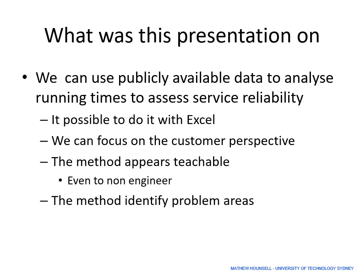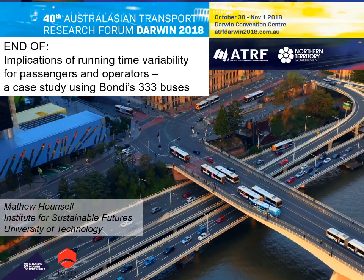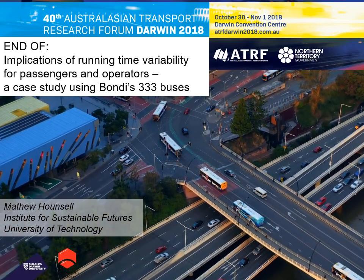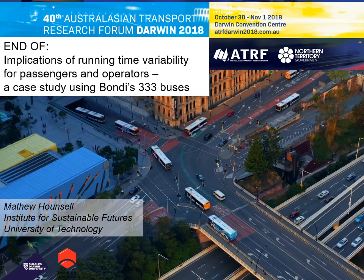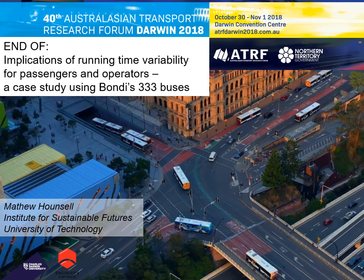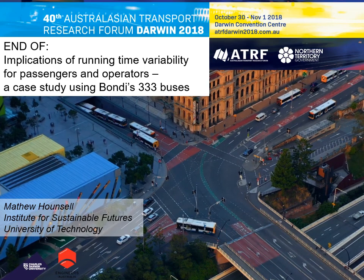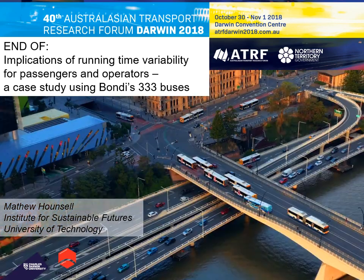In conclusion, it is possible to use publicly available data to assess the reliability of a bus service. This analysis was done entirely in Excel, without code, making it teachable and customer-centric. Whisker plots and standard deviation are effective tools for identifying problem areas. The footage shown is of the Brisbane busway due to unavailability of Bondi Road corridor stock footage. Special thanks to Neil Douglas, a transport economist from New Zealand, and to the Transport for NSW open data team on whose platform this data was released for public analysis.